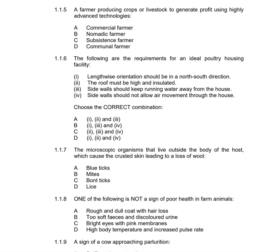Question 1.1.6 lists requirements of an ideal poultry housing facility: lengthwise orientation north to south, roof must be high and insulated, sidewalls should keep running water away, and sidewalls should not allow air movement. Point IV is wrong — without air movement your poultry will die. There is no life without air movement in the house. The answer is A.